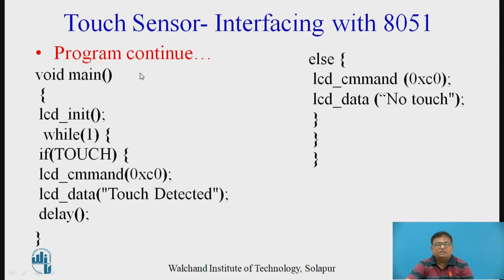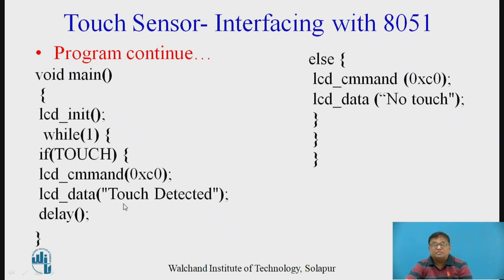In the main function, first the LCD is initialized by calling the function LCD_initialize. Then an infinite loop — while(1) — continuously checks the status of P3.0, which is connected to the signal output of the touch sensor. If touch is one, then send the required commands to the LCD and display the message 'Touch is detected.' If touch is not equal to one — meaning touch is zero — send a series of commands and display the message 'No touch' on the screen.